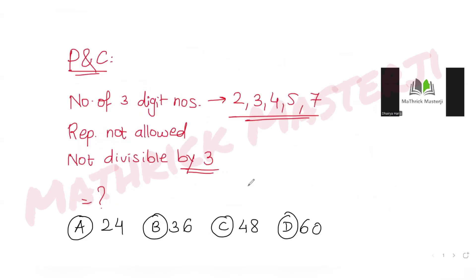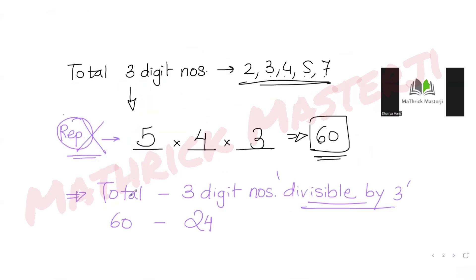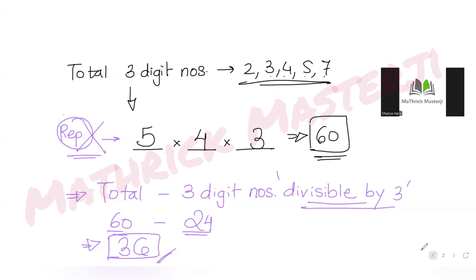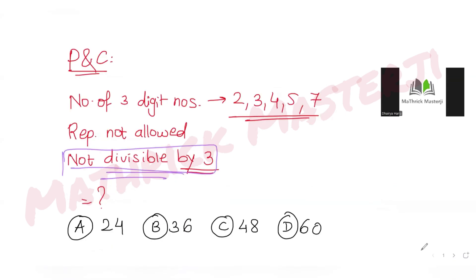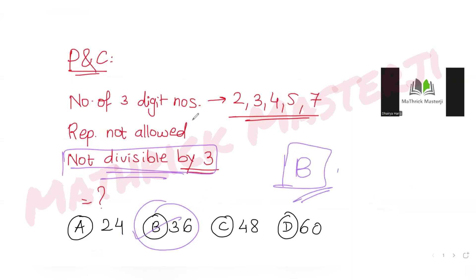The question asks for three-digit numbers not divisible by three. Using the complementary approach: 60 minus 24 = 36. So the answer is 36, which matches answer choice B. B is the correct answer.